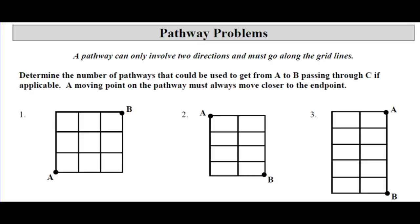Pathway problems — we're going to look at two different ways. You want to get from A to B, passing through C if applicable. A moving point on the pathway must always move closer to the endpoint. So if you're going from A to B, you can't go up, over, and then down. You always have to be getting closer.